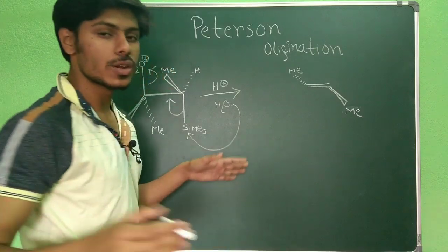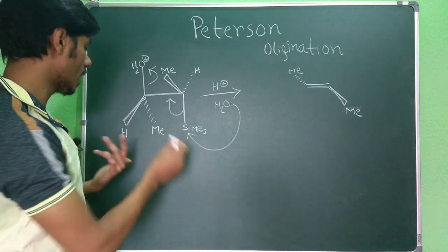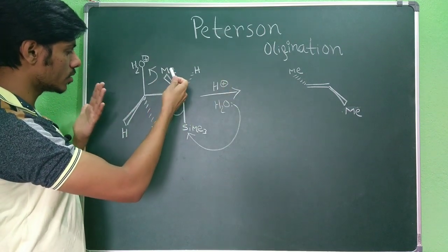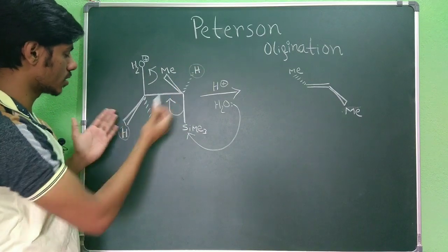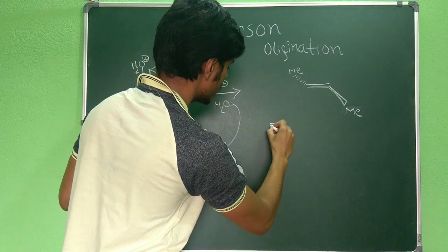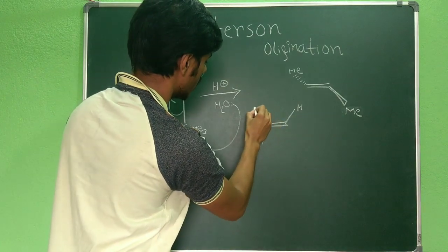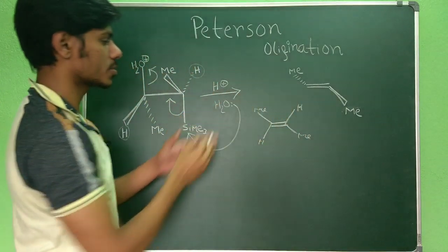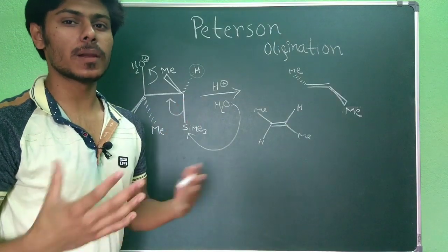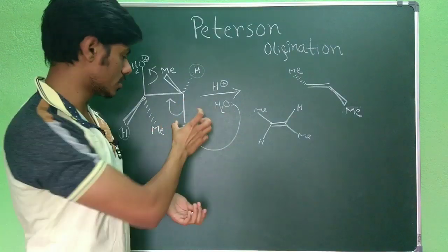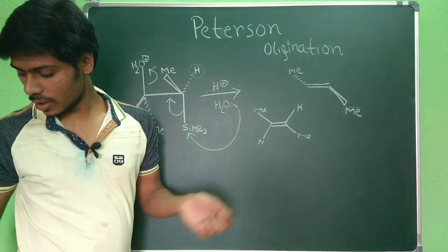This is a kind of E2 elimination reaction, and since it is E2, it must be stereospecific — the transition state requires anti-periplanar geometry. Whatever geometry the methyl and hydrogen groups have in the starting material will be manifested in the product. In the starting material, the two hydrogens are trans to each other — one above the plane, one below — so this is maintained in the product. The anti-periplanar arrangement of the silicon-carbon bond and the silicon-oxygen bond drives the reaction to give the trans product.